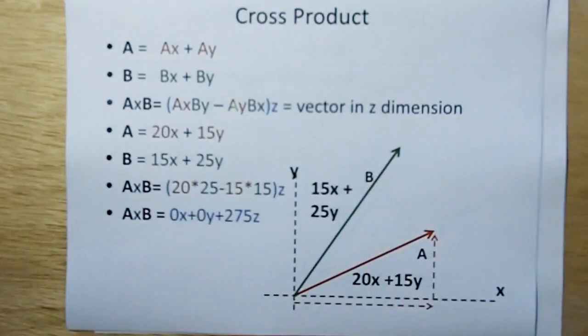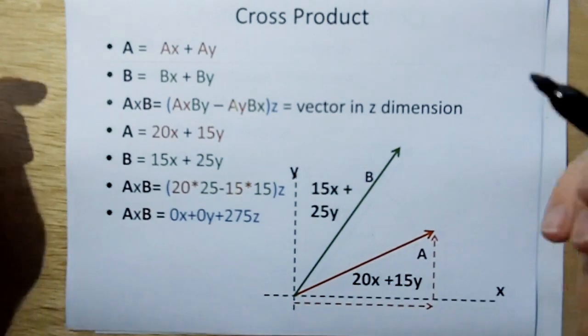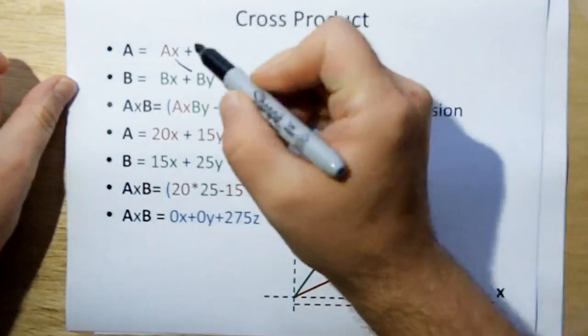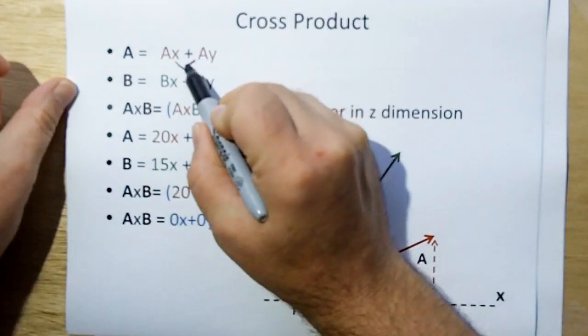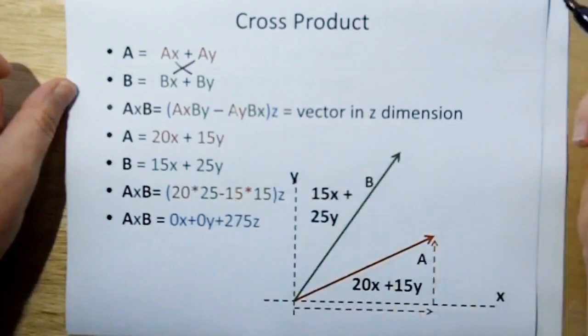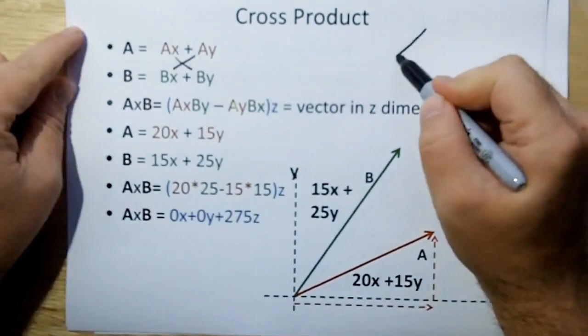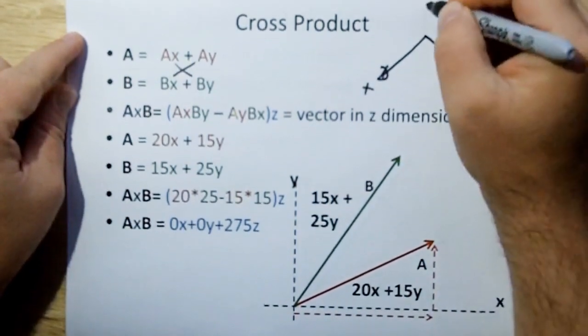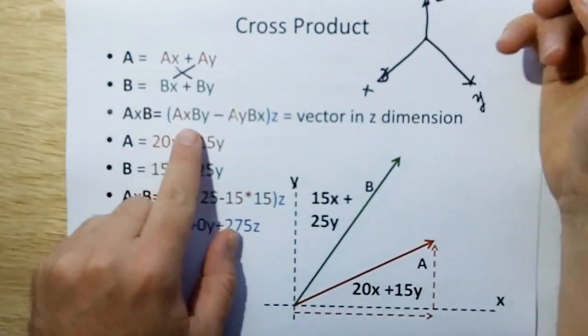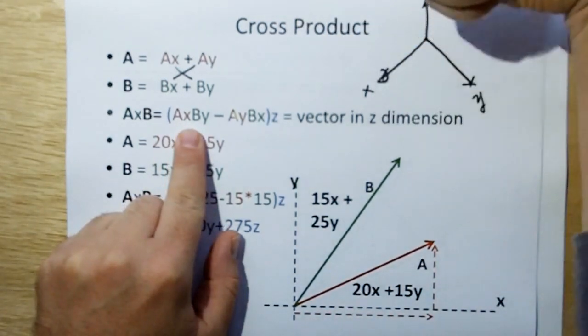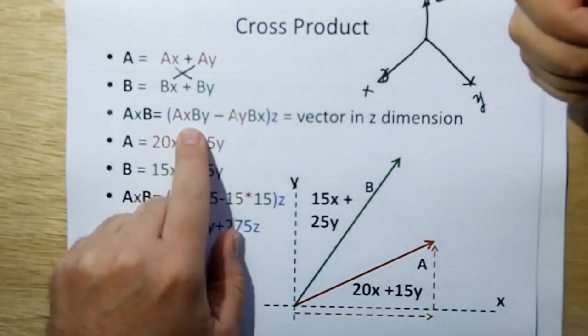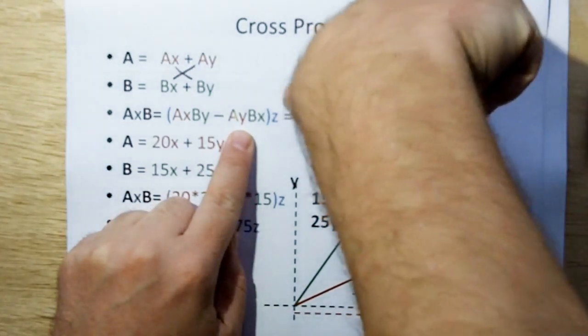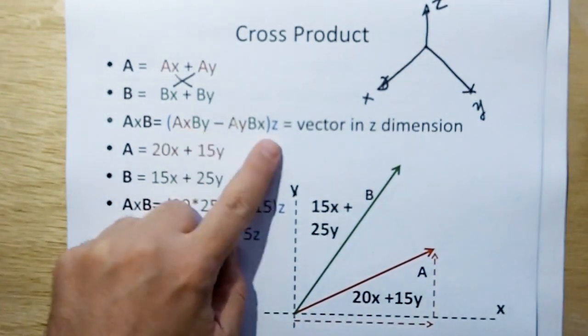Now let's talk about the cross product. Cross product, as the name sounds, you take the cross. You multiply AX times BY, and you multiply AY times BX. Now there's a minus sign here, because if we look at the right-hand rule, X, Y, Z, well AX*BY would be positive Z. But AY, which would be over here, swung around to X would be negative Z, so that's where the minus sign comes from. It's due to the right-hand rule.